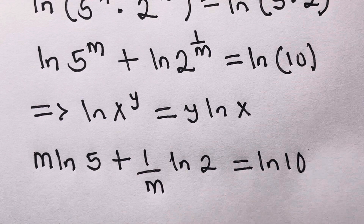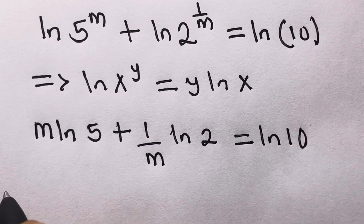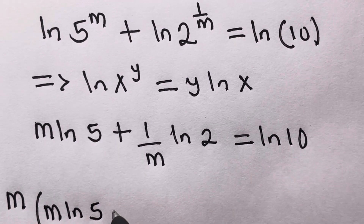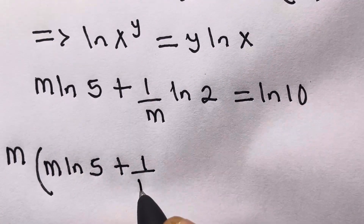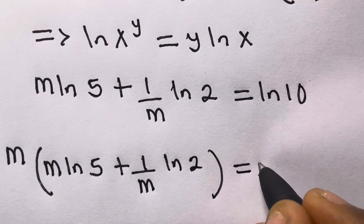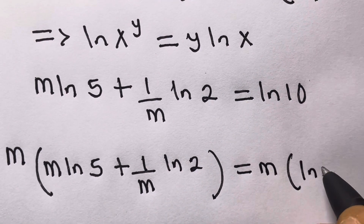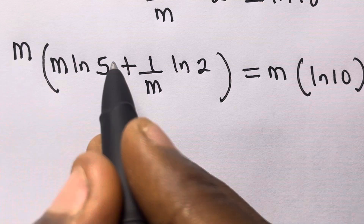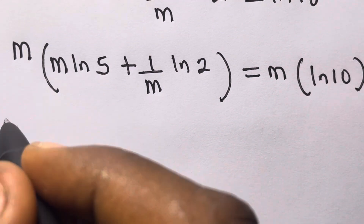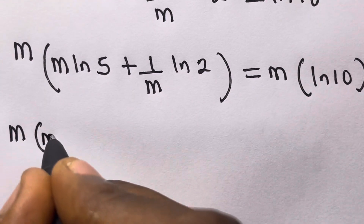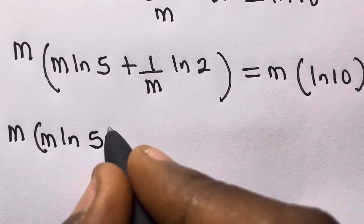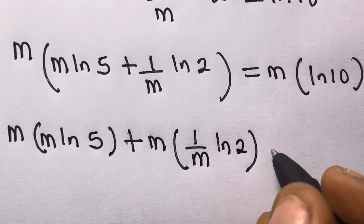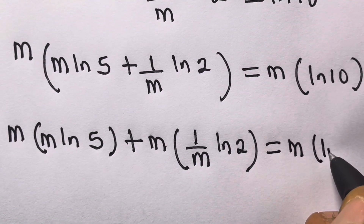So we have m·ln5 plus (1/m)·ln2 equals ln10. Now we multiply everything through by m. So we get m times m·ln5, which gives m²·ln5, plus m times (1/m)·ln2, which gives ln2, equals m·ln10.